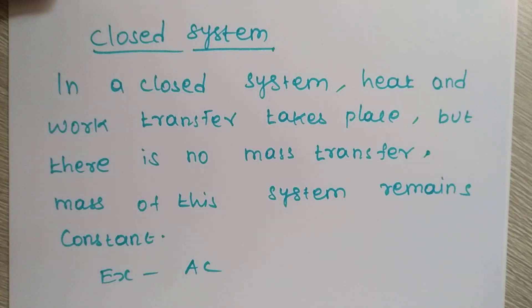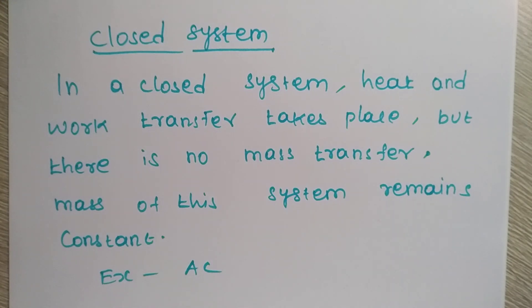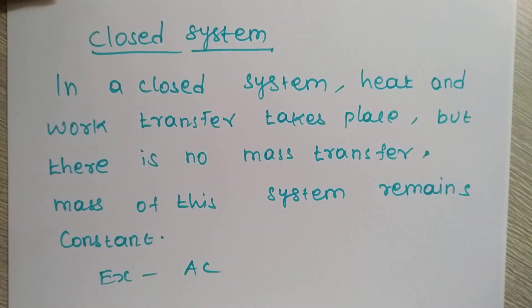In the last video, we looked at the closest system and isolated system. Now, the system types are closed system and open system. In a closed system, heat and work transfer takes place but there is no mass transfer. The mass of this system remains constant.